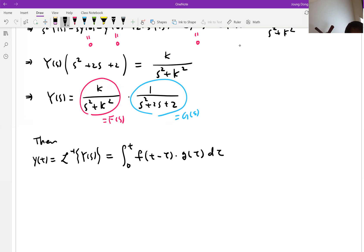So here, we have to find two functions first. f of t is inverse Laplace transform of k over s square plus k squared, which we already found. It is sine kt, right? And then I'm talking about number five.